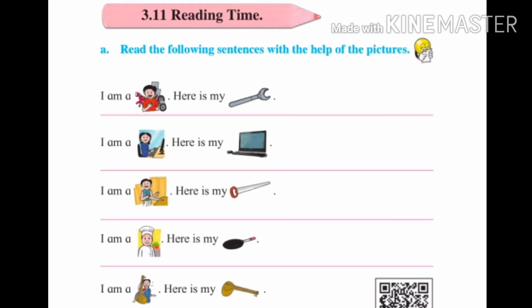The next sentence is: I am an office woman. Here is my computer. In the first half of the sentence there is a picture of an office woman — we can see that the woman is working in the office. In the remaining half, we can see the picture of a computer because that woman is doing her work with the help of a computer. So the final sentence is: I am an office woman. Here is my computer.